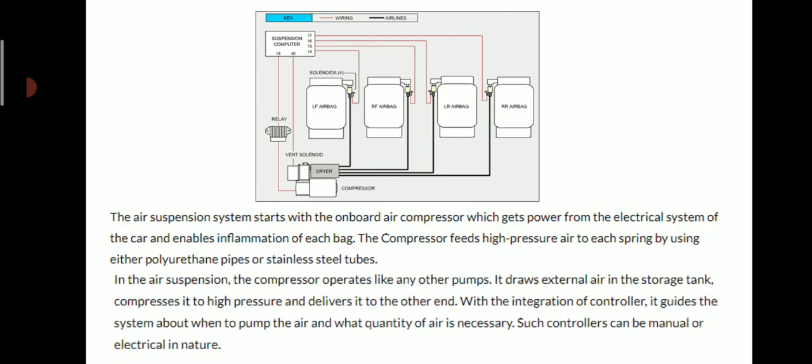In the air suspension, the compressor operates like any other pump — it draws external air into a storage tank, compresses it to high pressure, and delivers it to the other end. With the integration of a controller, it guides the system about when to pump the air and what quantity of air is necessary. Such controllers can be manual or electrical in nature.